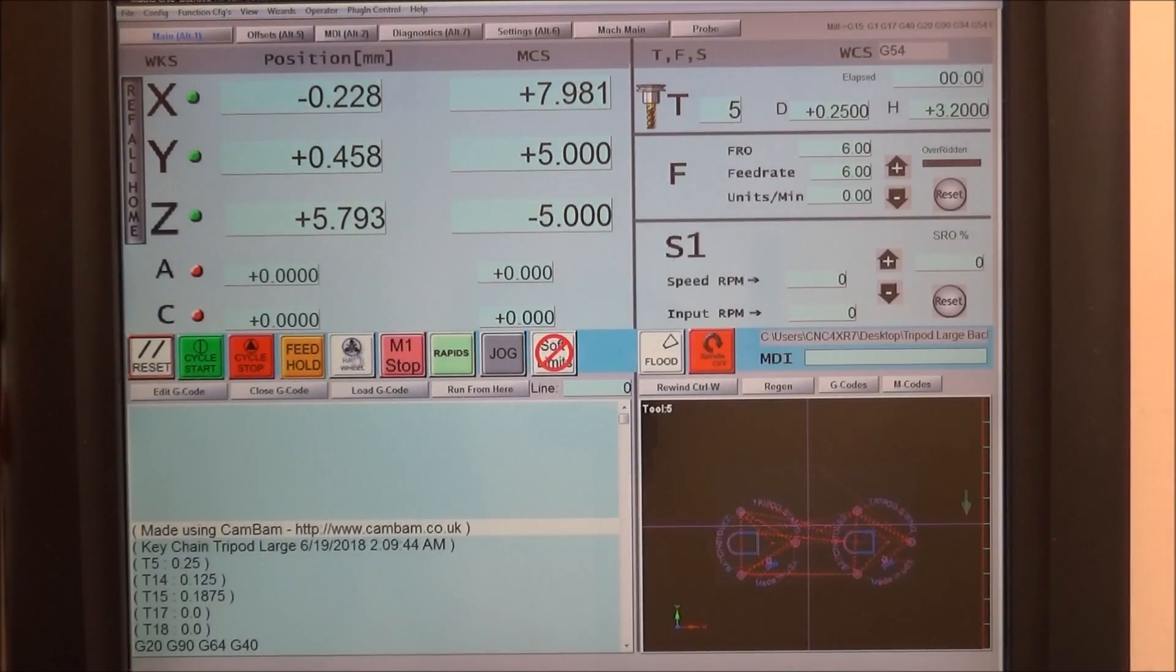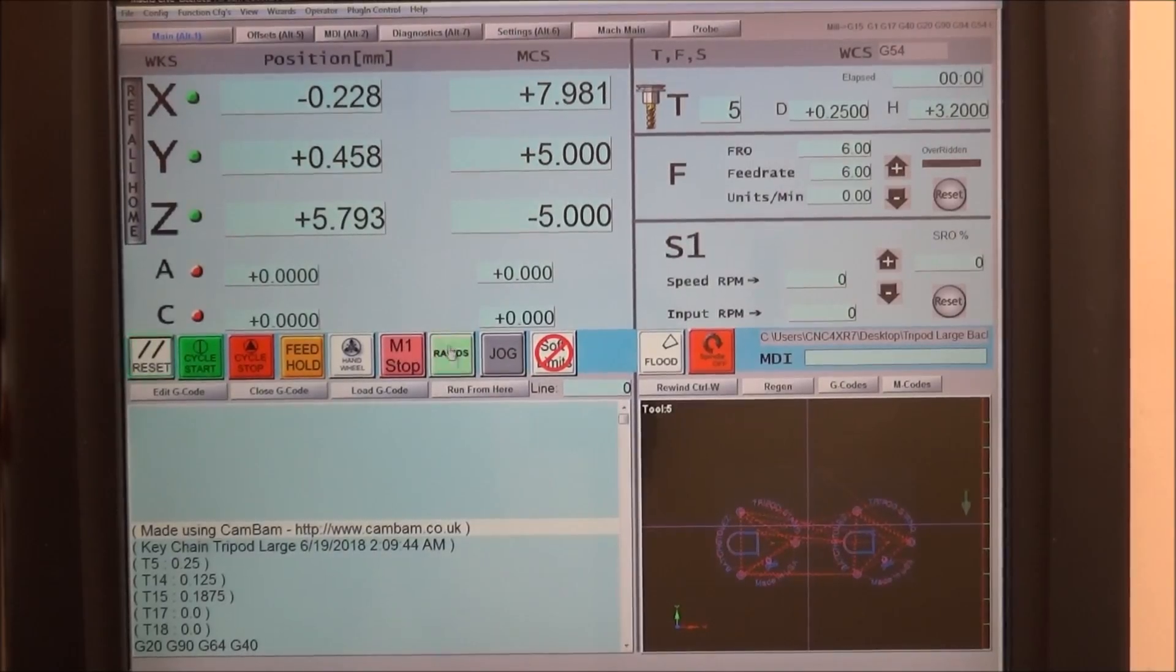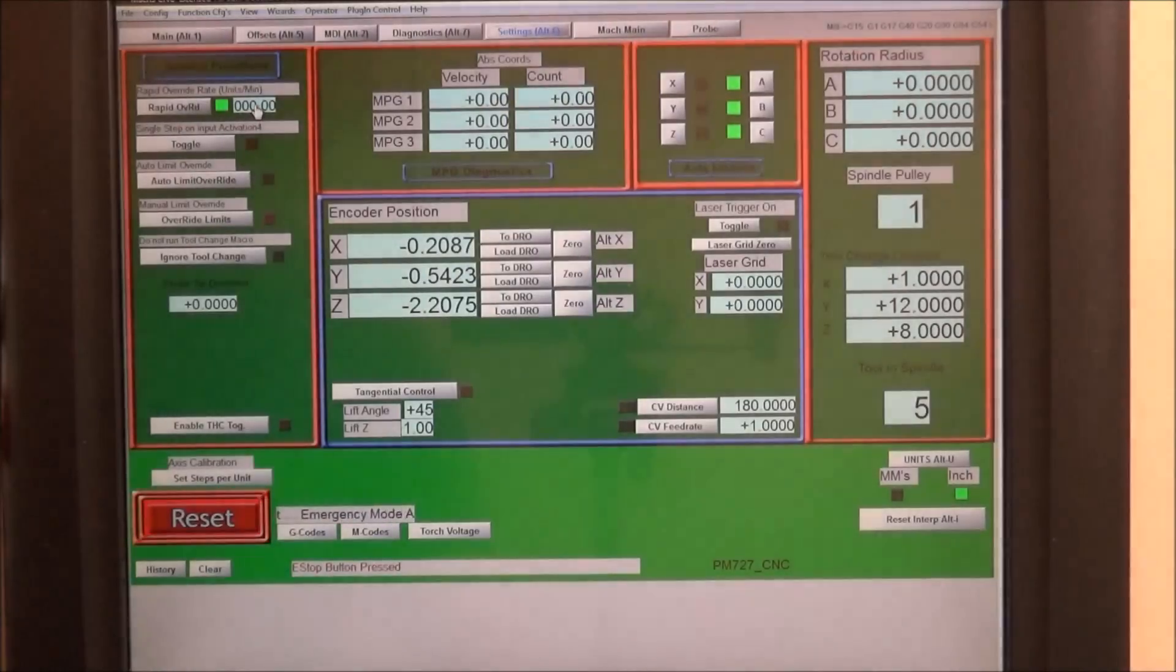M1 stop, this is a no rapids. So if you want to bypass your rapids here, you can click on this button and it will go to the default whatever you have sitting right here for your rapid speed. So if I set this for 20, then when it overrides and it calls for a rapid in the g-code, it will only go at 20 inches per minute.